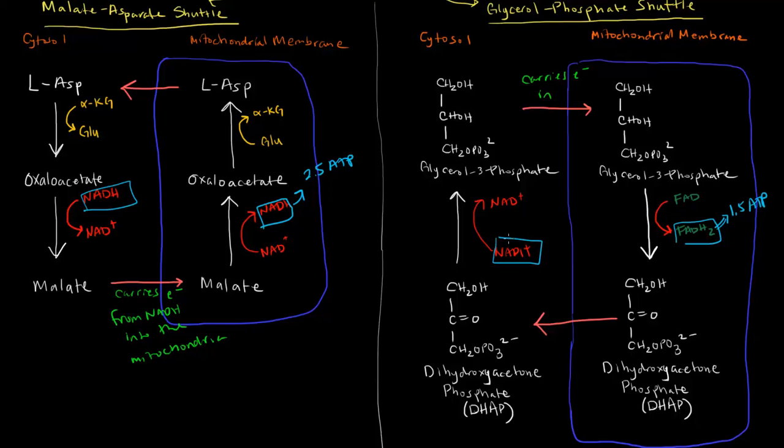So now, effectively, this NADH, which could have been worth 2.5 ATP, is now only worth 1.5 ATP, right? So this can continually happen again. The dihydroxyacetone phosphate can leave, and then this can happen again. So this is the reason why the NADHs in glycolysis can be worth 1.5 or 2.5 ATP, depending on which shuttle they actually go through.